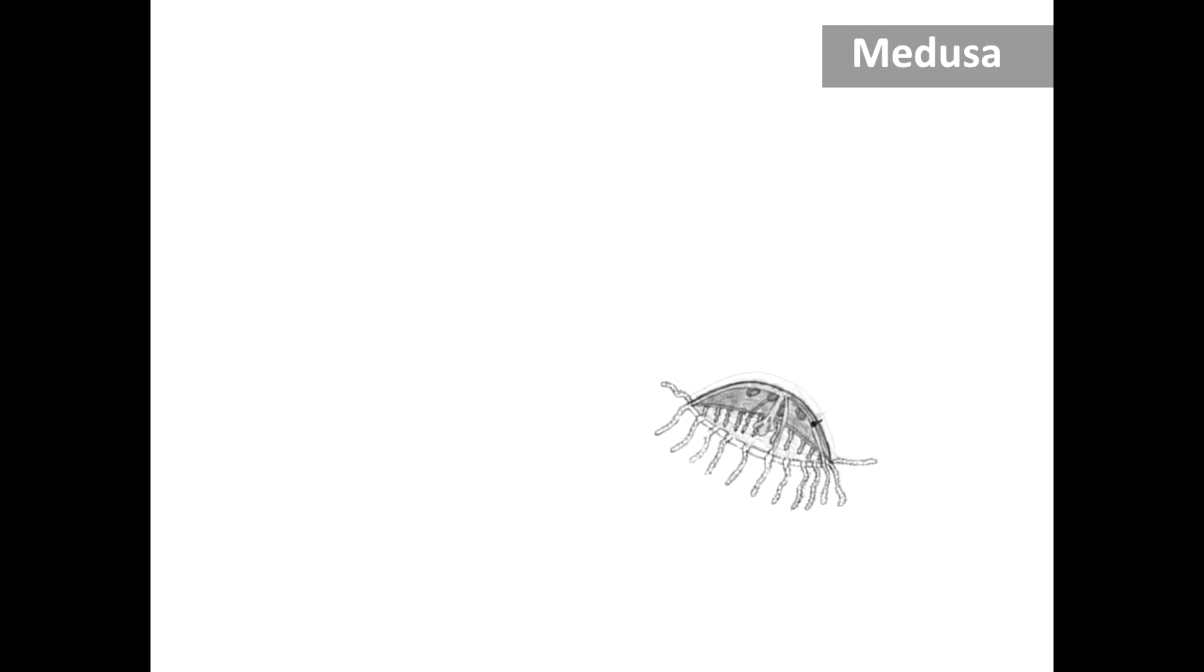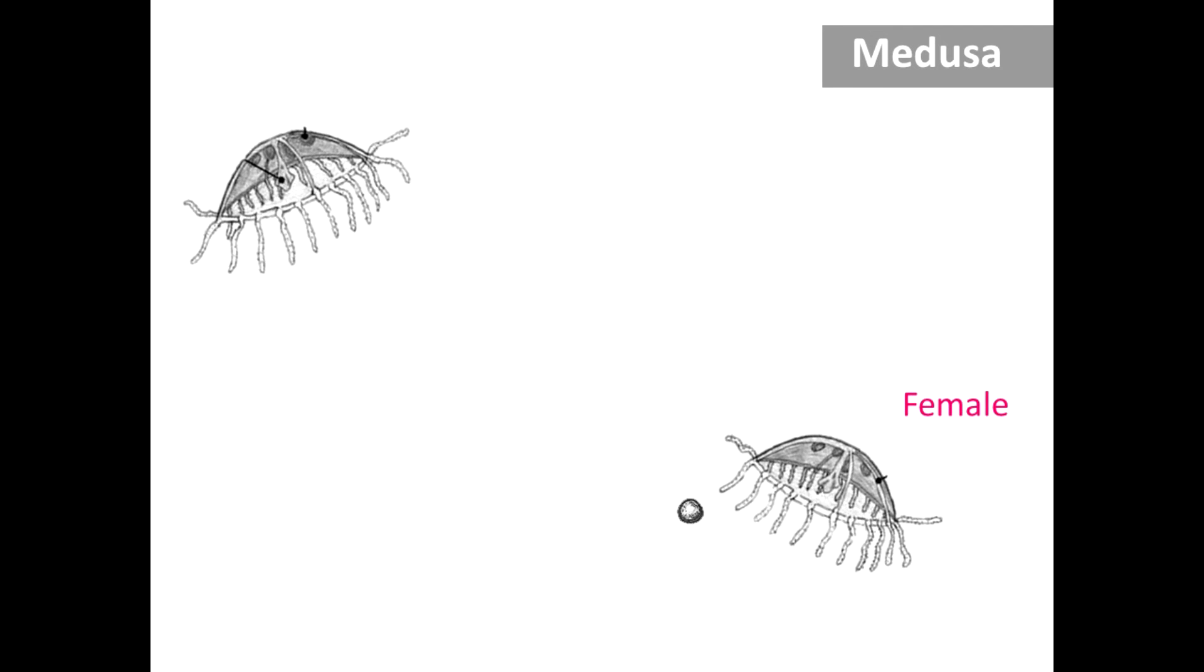The female and male medusa reproduce sexually, producing eggs and sperm. Both eggs and sperm are released into the water. The sperm is motile, using flagella for locomotion. The sperm seek out the eggs and fuse with them, forming a zygote.